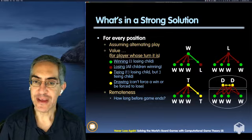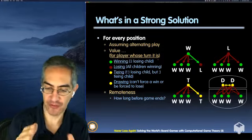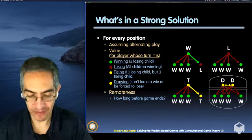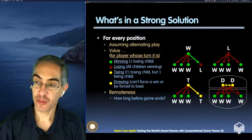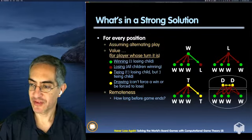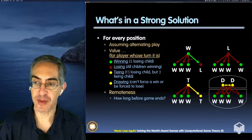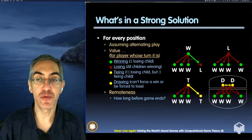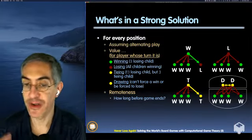There are four values we consider: winning, losing, tie, and draw. Circles represent positions and arrows represent moves or actions. A position is like a photograph of the board. This is a recursive definition — winning is defined based on losing, losing on winning — and at the end of the game there's a base position from which the logic bubbles up.